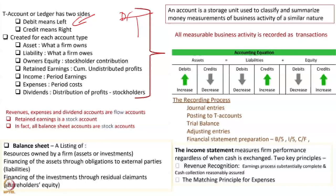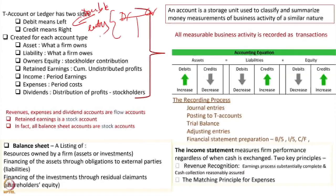A ledger is a book of record — it is where you actually record all transactions happening in the business. The records are kept in T-account form, where each T-account has two different headings: debit and credit. In actuality, debit means nothing but the left side, and credit means nothing but the right side, although they have Latin histories. They work together in what is known as the double-entry accounting system. Every transaction worthwhile of entering into the accounting books will hit at least two accounts. An account is nothing but a storage unit used to classify and summarize money measurements of business activity of a similar nature.